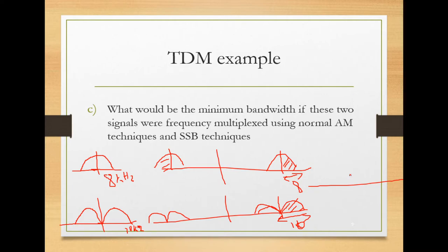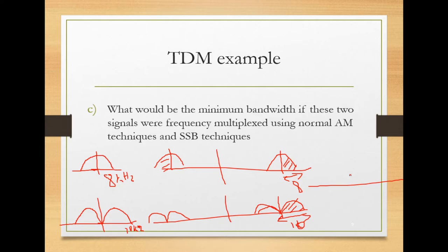Frequency division multiplexing is used in LTE and also in Wi-Fi. For Wi-Fi, the access point has around 11 to 14 channels. You typically use one channel, and if there is collision or interference you choose another channel randomly. This is why Wi-Fi has lower quality of service compared to cellular — you keep randomly trying until you successfully connect, so your connection is not always 100 percent guaranteed.